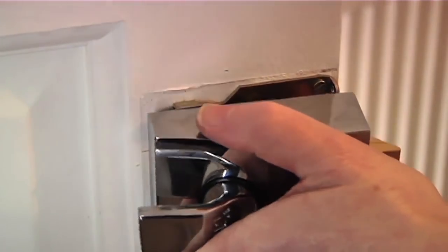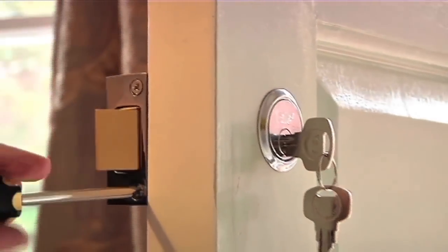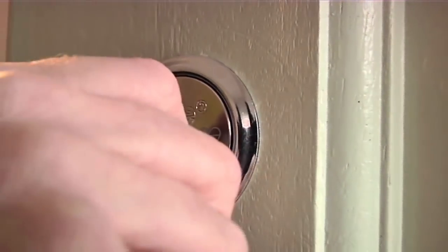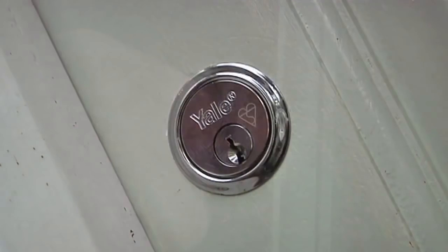Fix the night latch back into position and check it operates correctly before closing the door. Your new British Standard Rim Cylinder is now fitted.